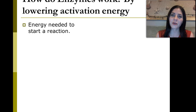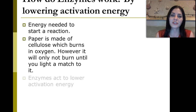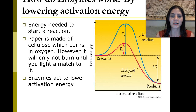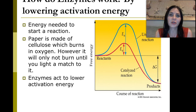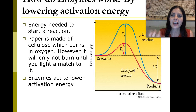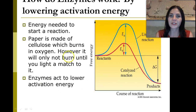How do enzymes work? They work by lowering the activation energy, which is the energy needed to start a reaction. For example, paper is made up of cellulose. Cellulose burns in the presence of oxygen. However, it will not burn unless you light a match and start a fire — paper will not spontaneously combust. We have to have a catalyst. In this instance, it's going to be a lighter igniting that paper and starting the reaction. The way enzymes speed reactions up is by lowering the activation energy, meaning the energy needed to get that reaction started.